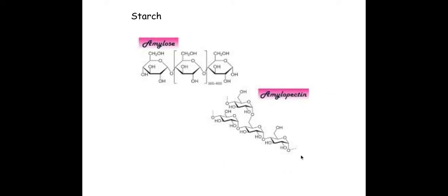Amylopectin which also makes up starch, has got alpha 1 to 4 and alpha 1 to 6 glycosidic bonds creating branches which are really good for the hydrolysis of the end monomers by enzymes to create alpha glucose.